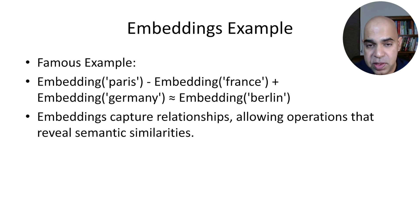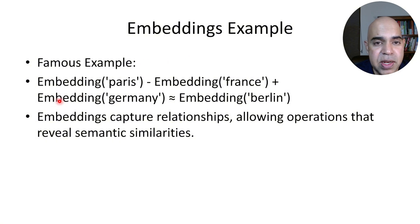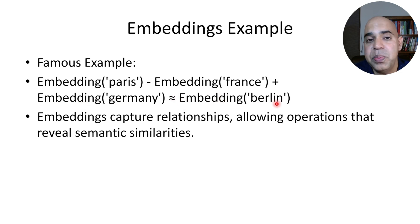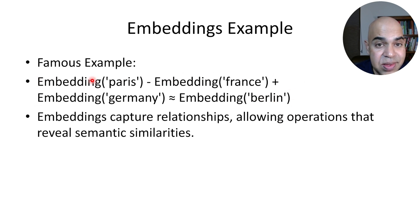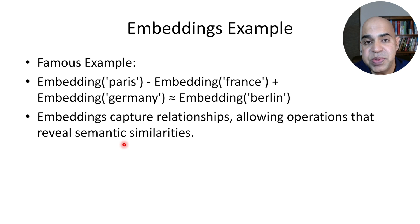After running for several epochs, you will have a converged embedding space. There is a famous example: if you take the embedding of the word 'Paris', subtract the embedding of 'France', and add the embedding of 'Germany', you are likely to get 'Berlin', which is the capital of Germany. To get these strong relationships, you need very large datasets. The main idea is that embeddings capture relationships — especially contextual relationships — allowing operations that reveal semantic similarities.